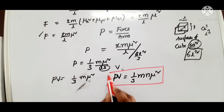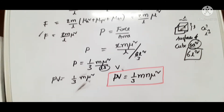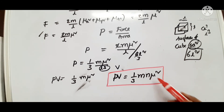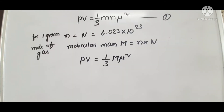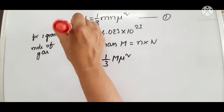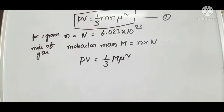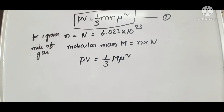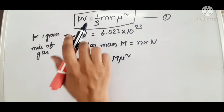This is the kinetic gas equation of kinetic theory, where P is pressure, V is volume, m is mass, N is number of molecules, and mu is the speed or velocity of the gas molecule. Finally, PV equals 1 by 3 m N mu squared — this is the kinetic gas equation.